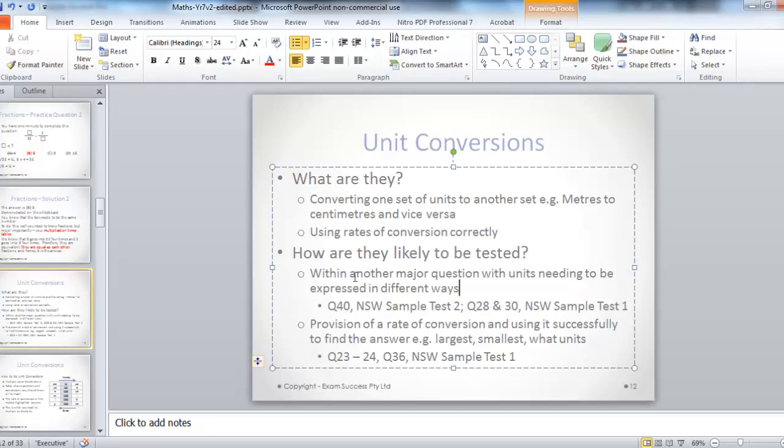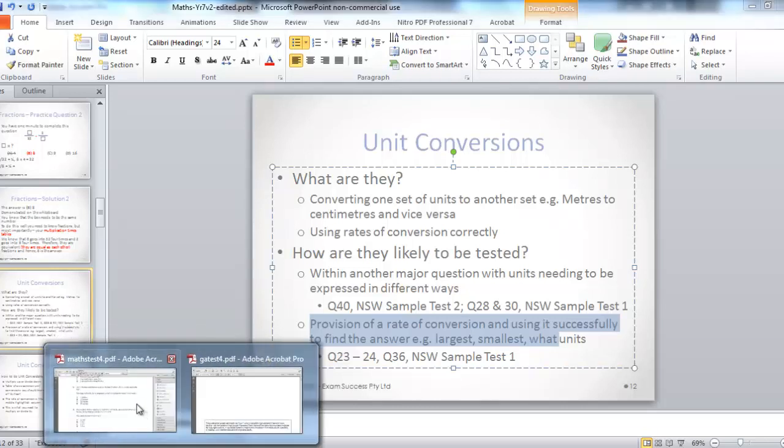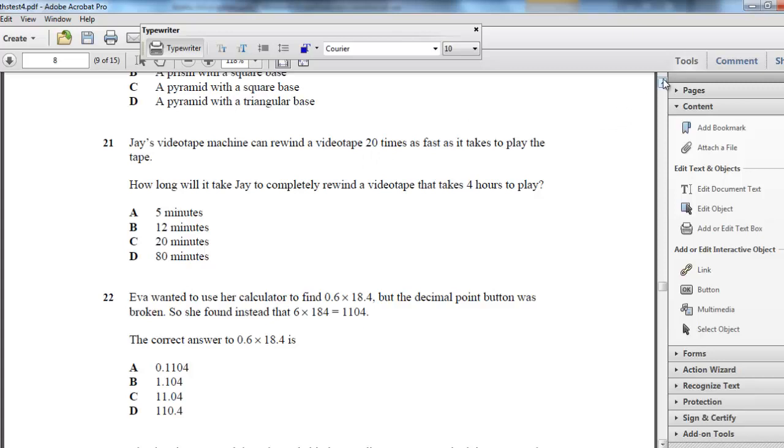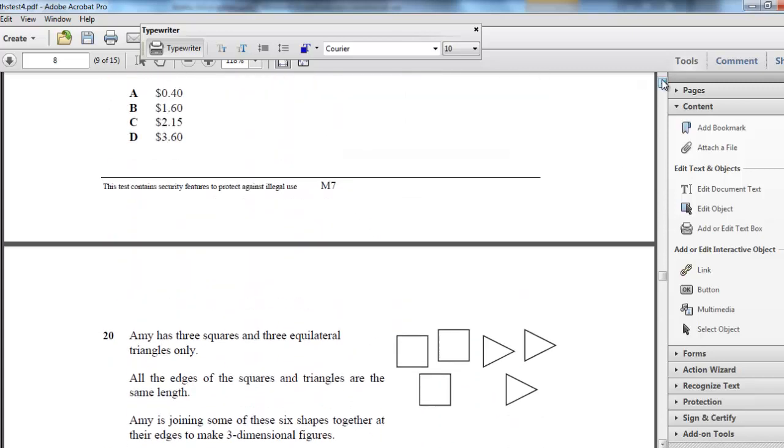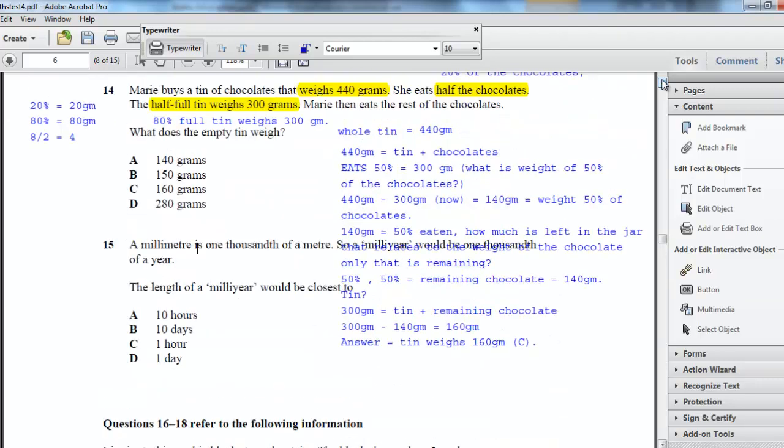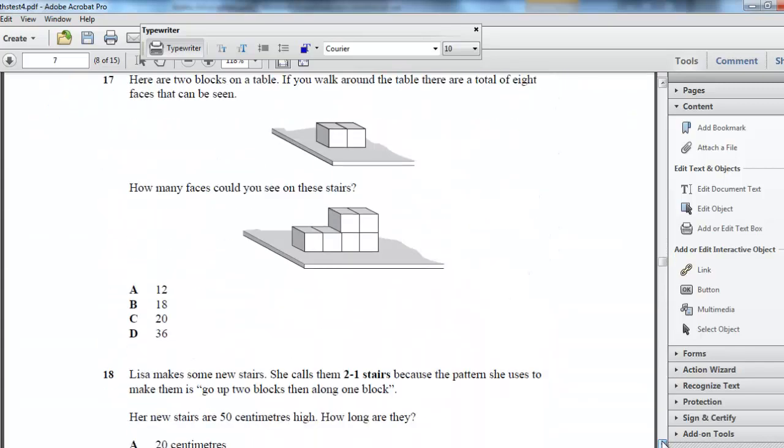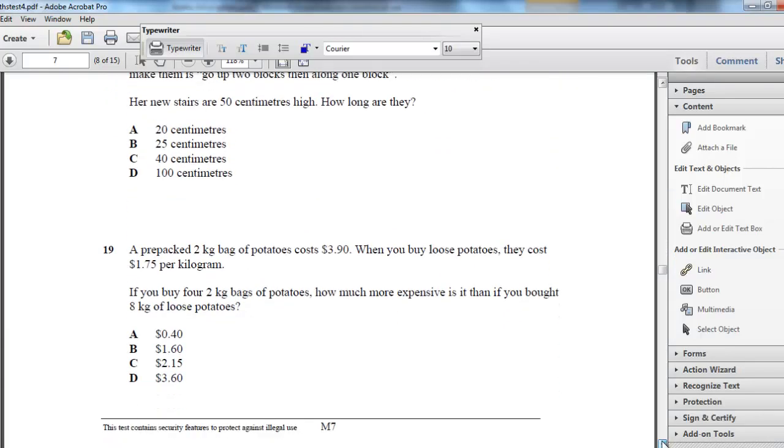So it's within another major question or the provision of a rate of conversion and using it successfully to find the answer. For example, one of those questions is here. So where they provide you with a unit and then they ask you to change to find the answer. So question 15, a millie year, a millimetre is a thousandth of a metre, so a millie year would be one thousandth of a year. These are the sort of unit type questions.